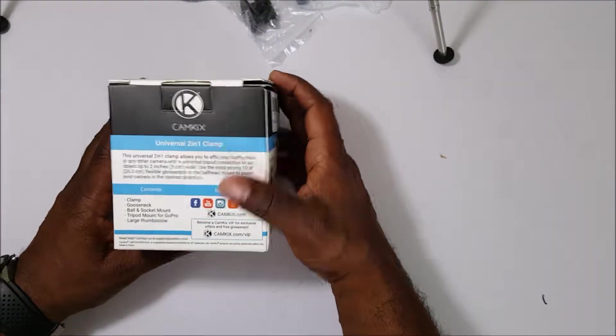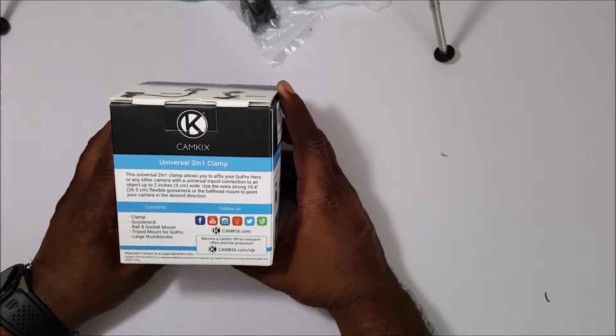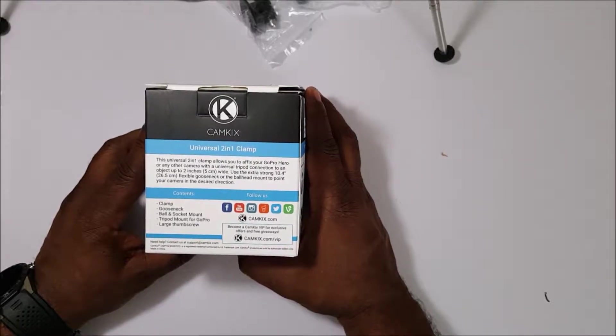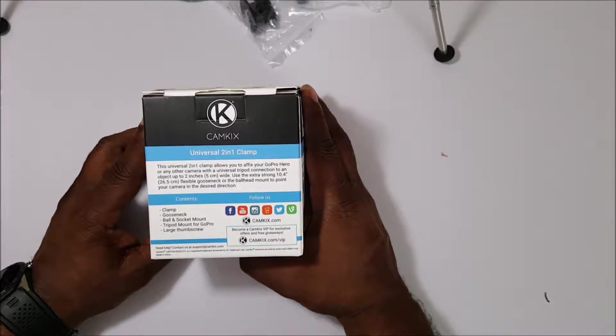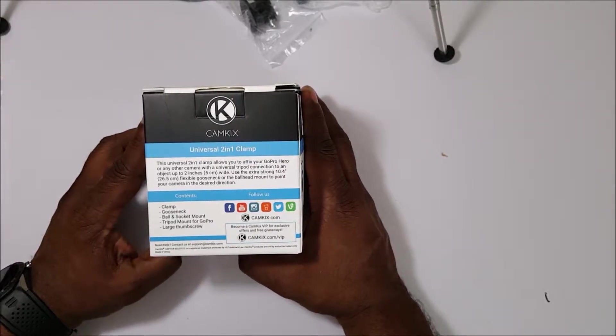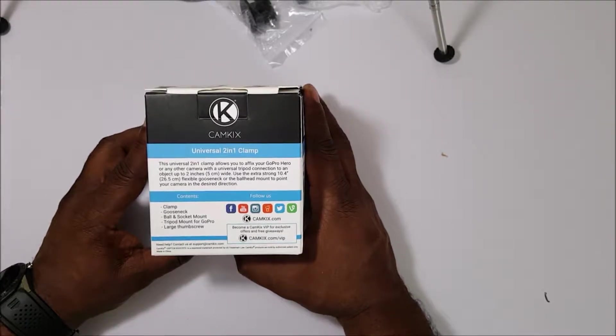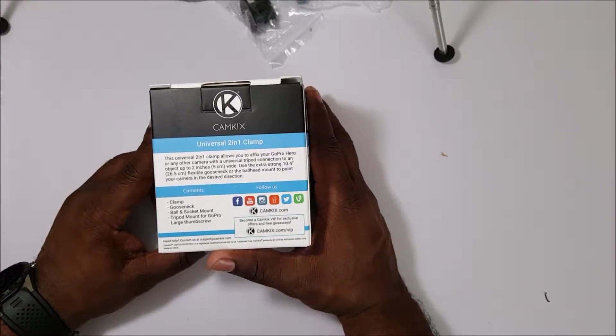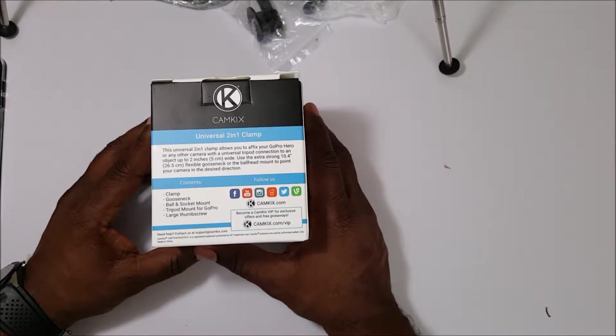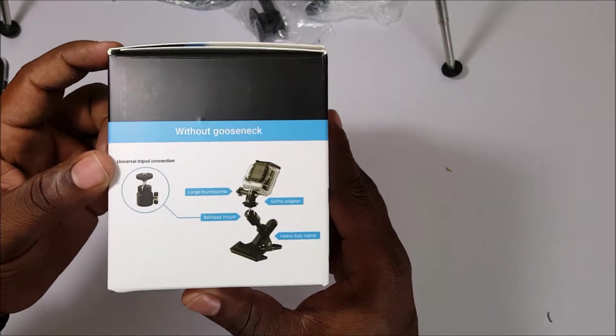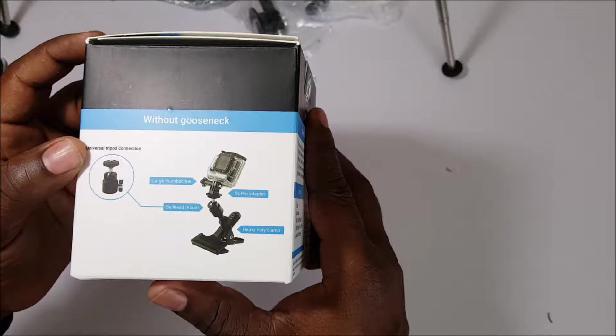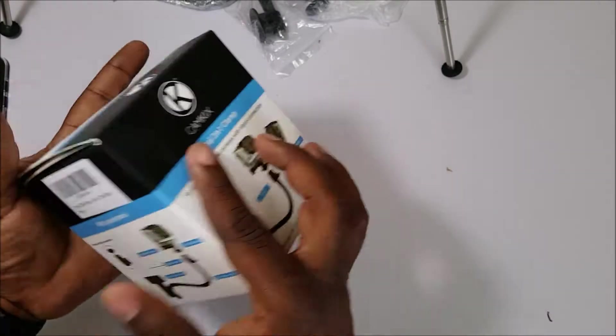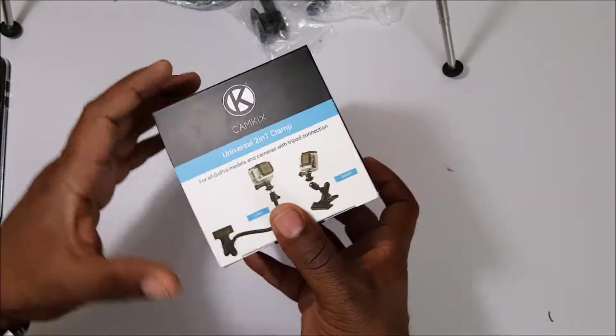We'll go over what's in here. Let's take a look. This universal 2-in-1 clamp allows you to fix your GoPro Hero or any other camera with a universal tripod connection to an object up to two inches or five centimeters wide. Use the extra strong 10.4 inch or 26.5 millimeter flexible gooseneck or the ball head mount to point your camera in the desired direction. I'm going to learn how to talk soon enough. Let's see here: large thumbscrew, ball head mount, GoPro adapter, heavy-duty clamp. Long or short, you can go either way with this. So when I saw it on Amazon I said all right, this is definitely something I want to give a try out.